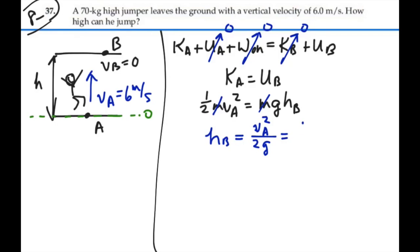And that is going to be 6 squared divided by 2 times 9.8, and that's equal to 1.84 meters.